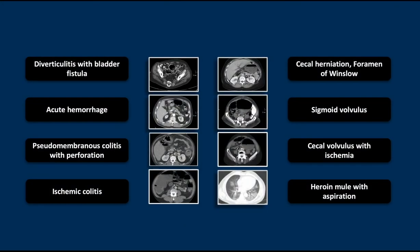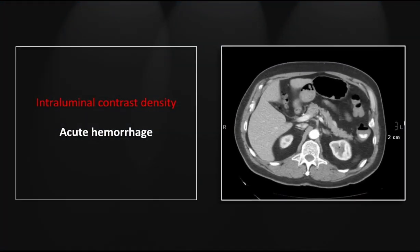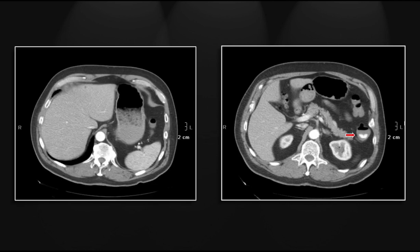Our next case is of acute colonic hemorrhage. This is not particularly challenging, but the CTA for acute colonic hemorrhage is becoming a very commonly performed examination. For the sake of everyone's edification, we'll look at one simple case of it. You can see the contrast density within the lumen there in the descending colon.